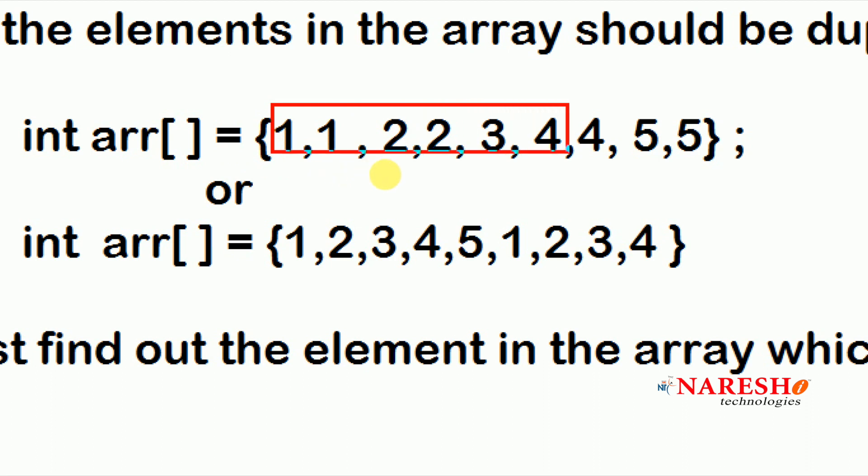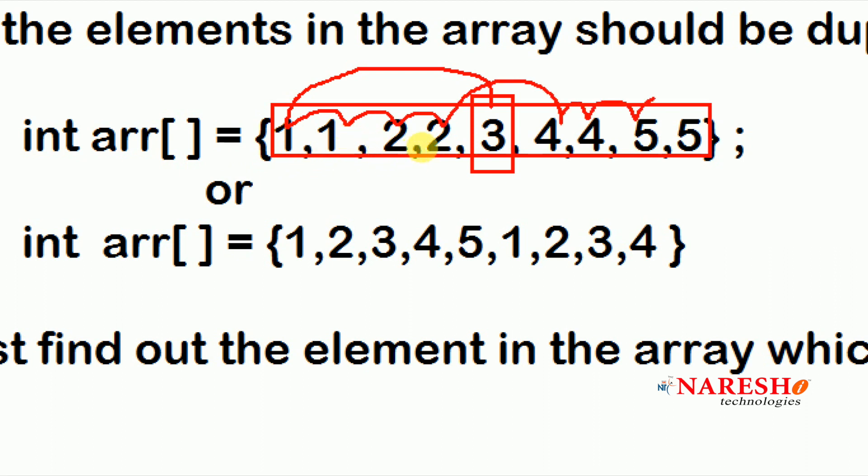Keep on checking using two for loops. The outer for loop represents the index element. The inner for loop checks if a duplicate element is present or not. Suppose the index element is 5, nothing but the fourth index. When comparing with all the elements, if the index element is not matching with any other element, this is the unique element.